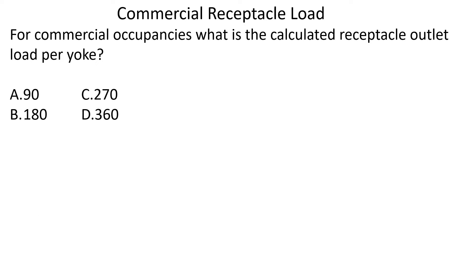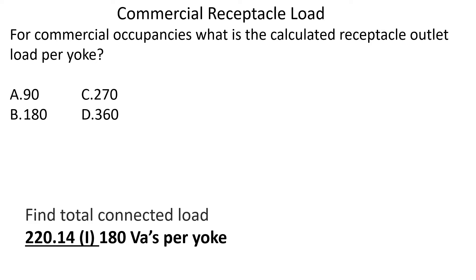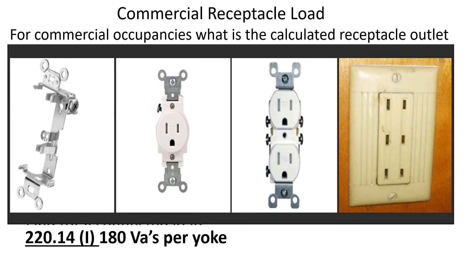For commercial occupancies, what is the calculated receptacle outlet load per yoke? First, we find our total connected load. We head to 220.14I, which tells us it's 180 VAs per yoke. But what is a yoke? A yoke — also called a device strap — is what holds all the pieces together. Whether we have a single, a duplex, or even a triplex receptacle, each one counts as 180 VAs. Each gang counts as 180 VAs: a single-gang box is 180 VAs; a two-gang box with receptacles on each side is 180 VAs per gang, and so on. Any device strap, whether it has one, two, or three receptacles on it, is 180 VAs per yoke.